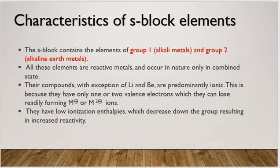All these elements are very reactive metals and occurs in nature only in combined state. Their compounds, with the exception of lithium and beryllium, are ionic compounds. This is because they have only one or two valence electrons and they used to readily remove their electron to form M plus 1 or M plus 2 ions. They have very low ionization enthalpy, which decreases down in a group, resulting in increased reactivity.